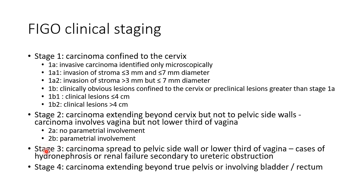In stage 3, the carcinoma spreads to the pelvic side wall or the lower third of the vagina. It includes all cases of hydronephrosis or renal failure secondary to ureteric obstruction. Stage 4 is carcinoma extending beyond the true pelvis, or carcinoma involving the bladder or rectum.